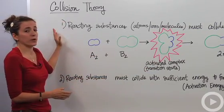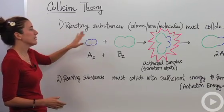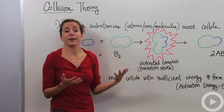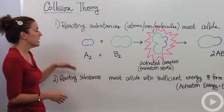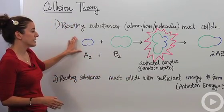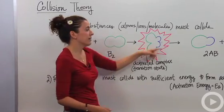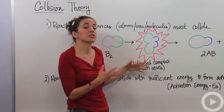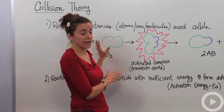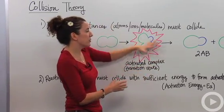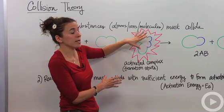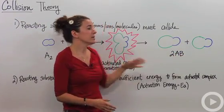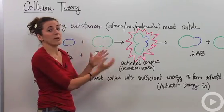So the first thing we're going to have to discuss is the fact that the reacting substances, whatever we're dealing with—the atoms, ions, or molecules—must collide in order for the reaction to occur. So we have our two reactants A and B, and they must collide. And this is what we're going to call our activated complex or our transition state, transitioning from the reactants towards the products. It's going to create this very high energy activated complex and then yield our products, our 2AB. So the first postulate is that they must come together.